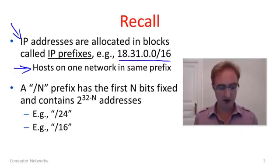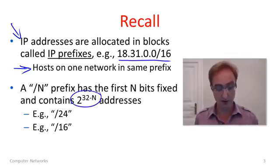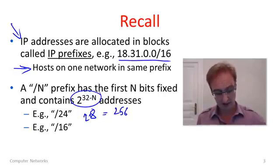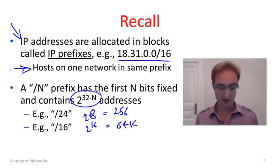Just as a reminder, let's work through an example. A slash n prefix has the first n bits fixed, so it contains 2 to the power of (32 minus n) addresses. For instance, a slash 24 will have 8 bits free, so it will contain 2 to the power of 8, which is 256 addresses. And a slash 16 will have 2 to the 16 addresses in it — that is 64k addresses, about 65,000 addresses.